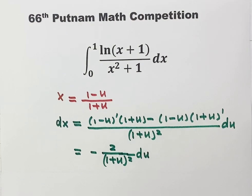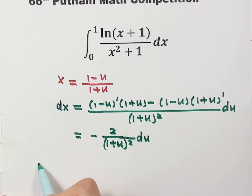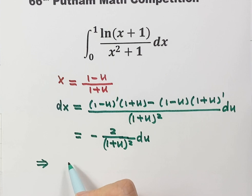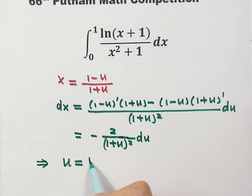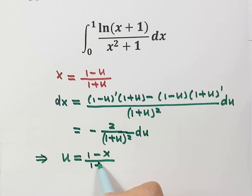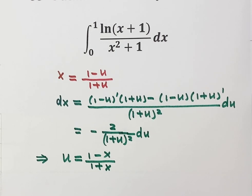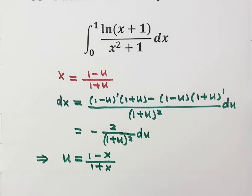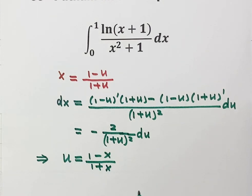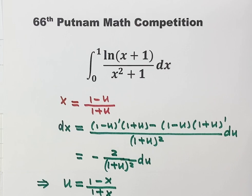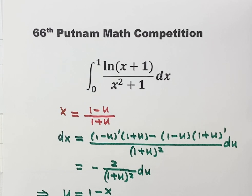From here, solving for u gives u = (1-x)/(1+x). You can see that x and u are symmetric. Next, we need to figure out the lower and upper limits for u.